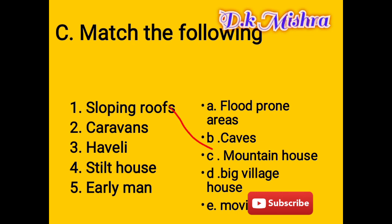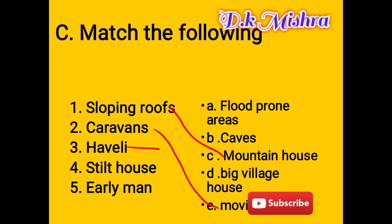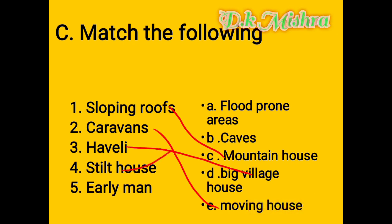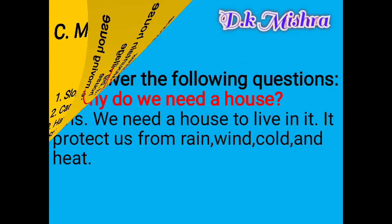Match the following: Sloping roof — mountain house. Caravan — moving house. Houseboat — big village house on water. Stilt house — flood-prone areas. Early man — caves.